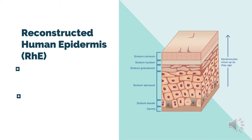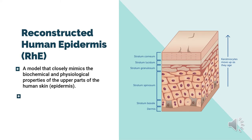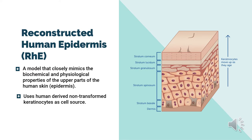Reconstructed Human Epidermis is a model that closely mimics the biochemical and physiological properties of the upper parts of the human skin, the epidermis. It uses human-derived non-transformed keratinocytes as cell source.